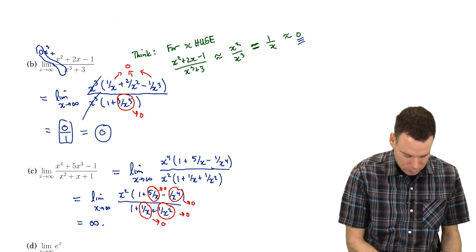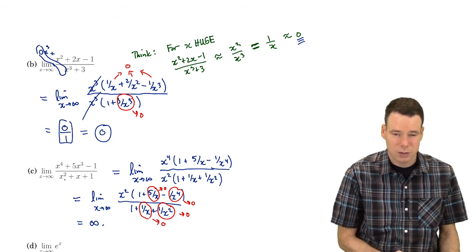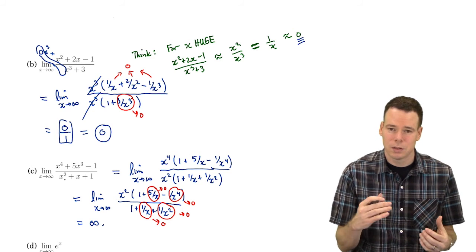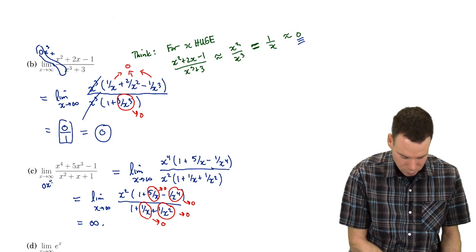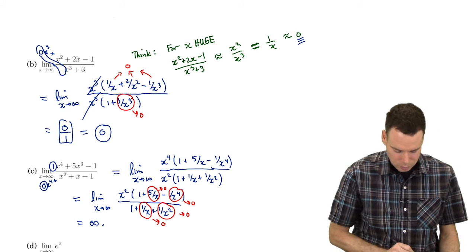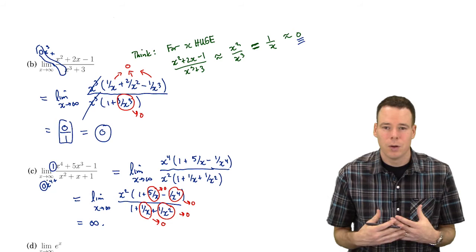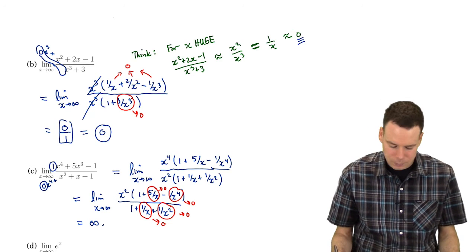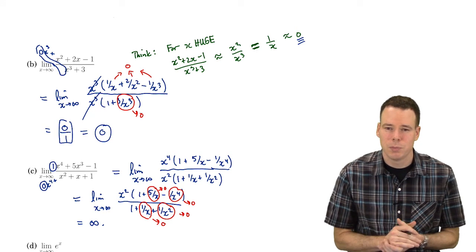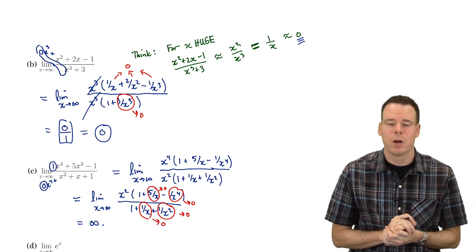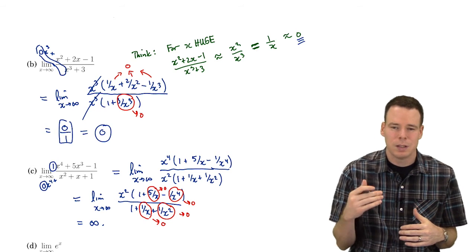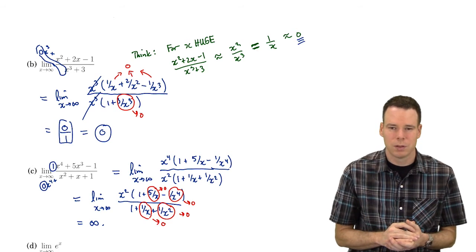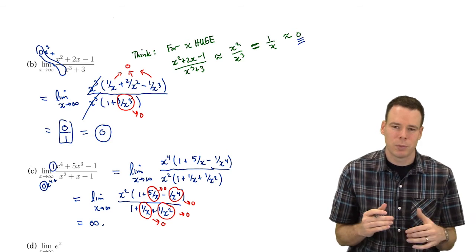For the last example, the top was x to the fourth and the bottom was x squared. x to the fourth grows much faster than x squared, so the whole thing goes to infinity. You could also think of the denominator as having 0 times x to the fourth plus lower terms, so the ratio is 1 over something really small, which is infinity. In general: if the degrees are the same, take the ratio of the leading coefficients. If the top degree is larger, the limit is infinity. If the bottom degree is larger, the limit is 0.